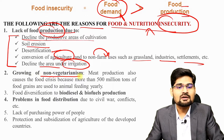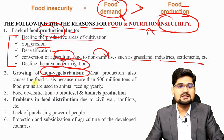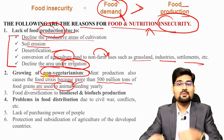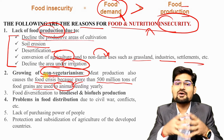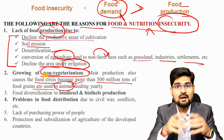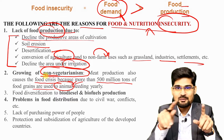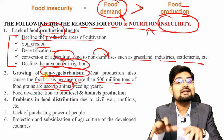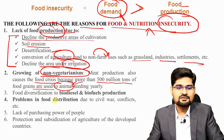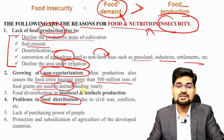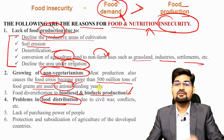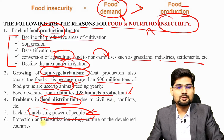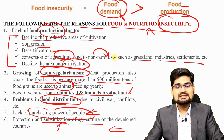Demand grows also due to the rise of non-vegetarianism. Meat production causes food crisis because more than 500 million tons of food grains are used for animal feeding. Many people say veganism is the answer to food insecurity, but there has to be a balance — a balance that includes fish, meat and eggs. Problems of food distribution, diversification in economy, and biodiesel and biofuel production also contribute. Lack of purchasing power of people related to poverty, and protection and subsidization of agriculture in developed countries, are also key factors.